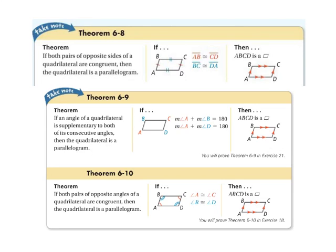So, if the measure of angle A plus the measure of angle B equals 180, and the measure of angle A plus the measure of angle D equals 180, then both B and D are supplementary to angle A. So, quadrilateral ABCD is a parallelogram.